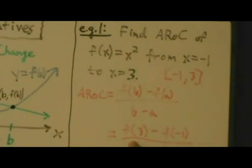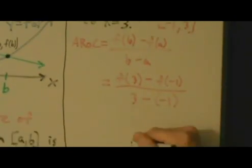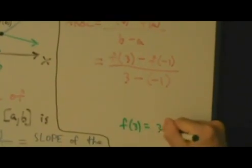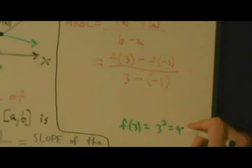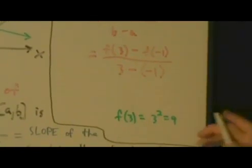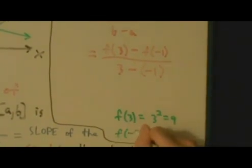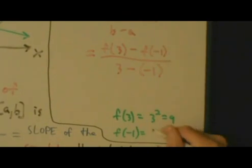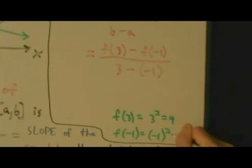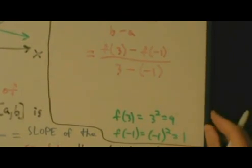All right, so f of 3 is going to be 3 squared. So let's come off to the side and write that down here. f of 3 equals 3 squared, which is 9. All right, and we also need f of negative 1. f of negative 1 is negative 1 squared, which is just positive 1.